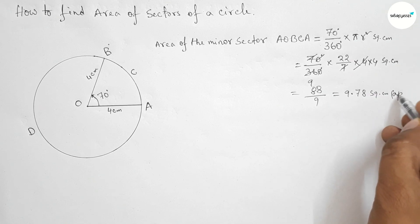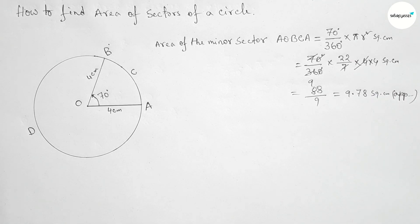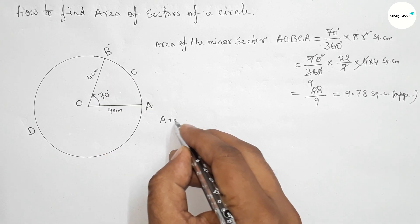You have to check this at home. So this is the area of the minor sector. Next, find the area of the major sector.